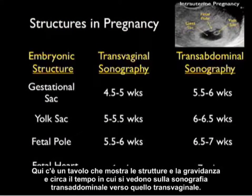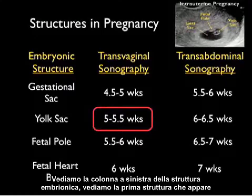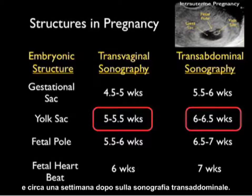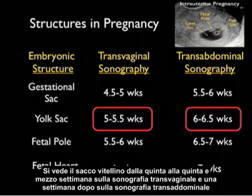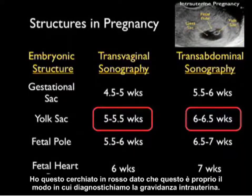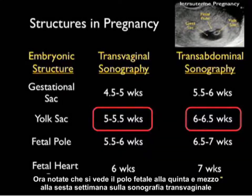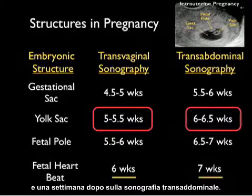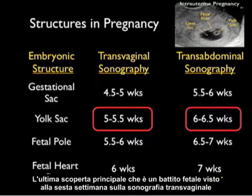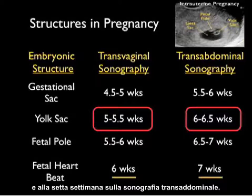Here's a table showing the structures in pregnancy and approximately when they're seen on transvaginal versus transabdominal sonography. The gestational sac is seen on transvaginal sonography at about 4.5 to 5 weeks and about a week later on transabdominal sonography. The yolk sac — circled in red as the key way we diagnose an intrauterine pregnancy — is seen at about 5 to 5.5 weeks transvaginally and a week later transabdominally. The fetal pole is seen at about 5.5 to 6 weeks transvaginally, and fetal heartbeat is seen at about 6 weeks transvaginally and about 7 weeks transabdominally.